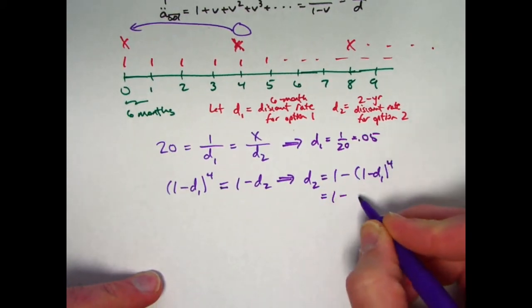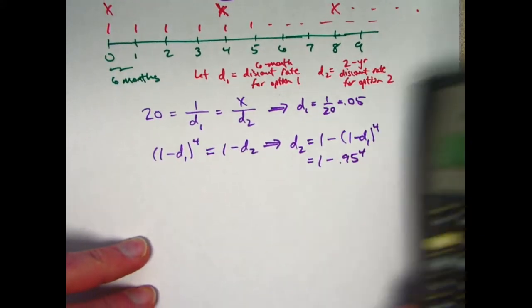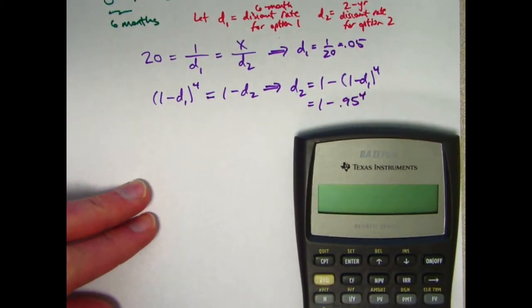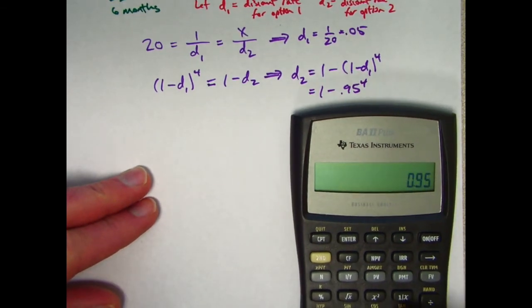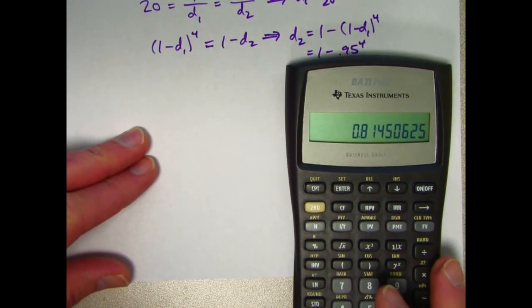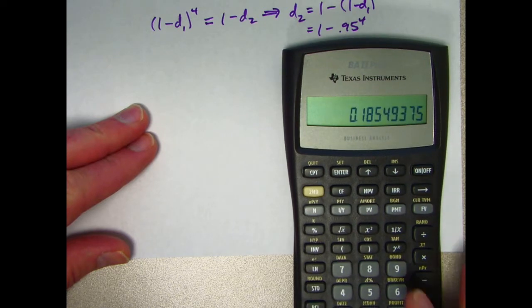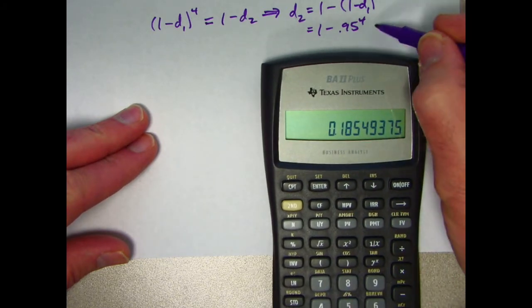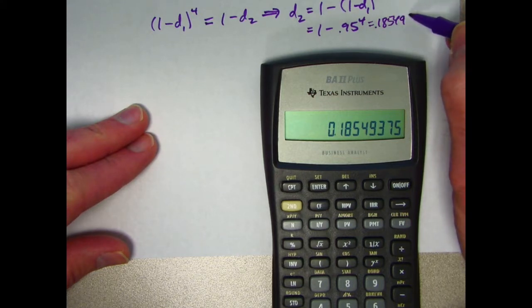So I get 1 - (0.95) to the fourth. Now we use the calculator. 0.95 to the fourth is this, subtract that from 1. There's d2, about 0.18549375.